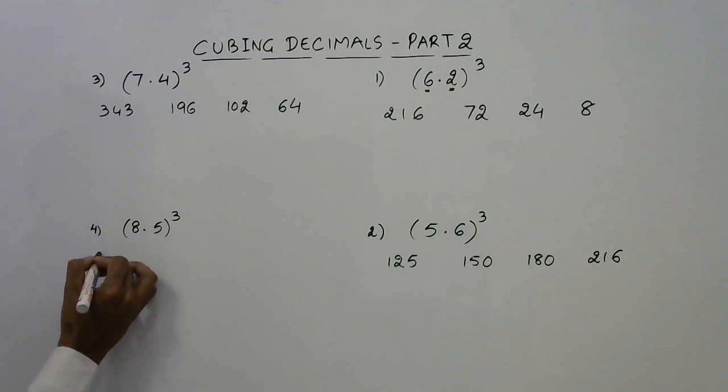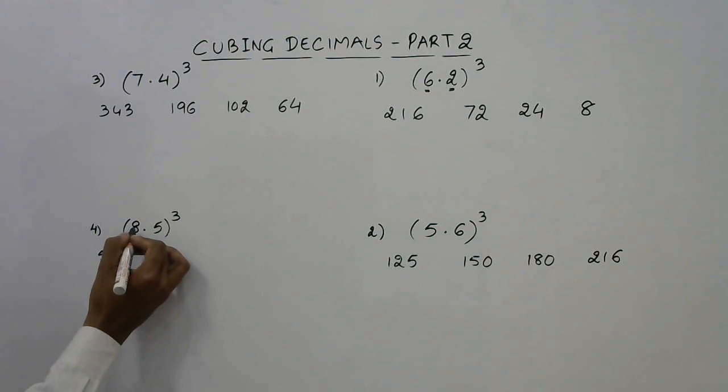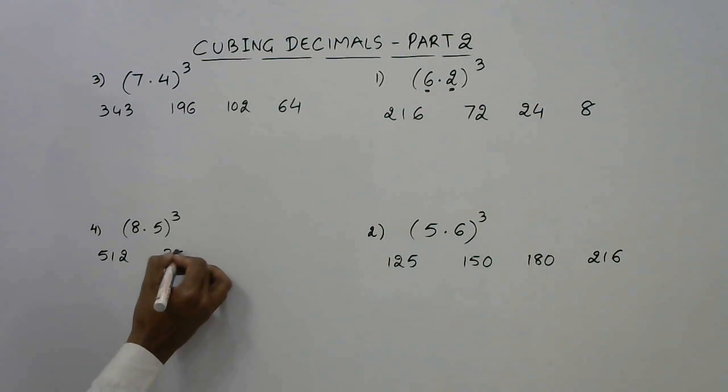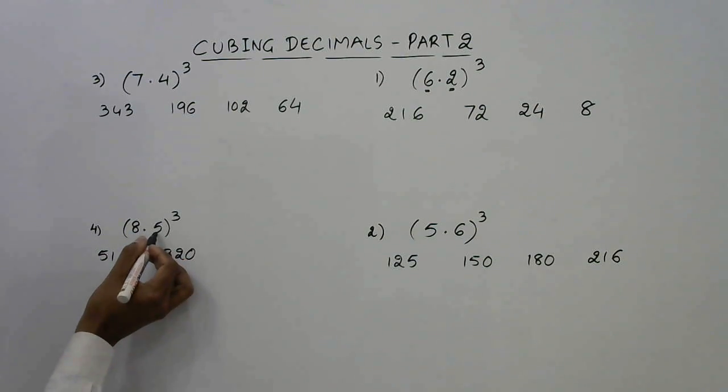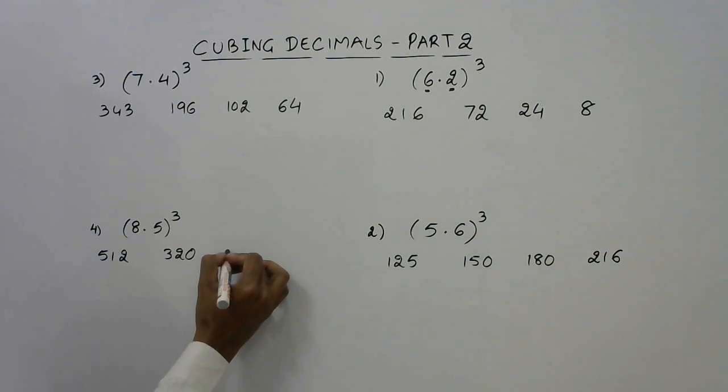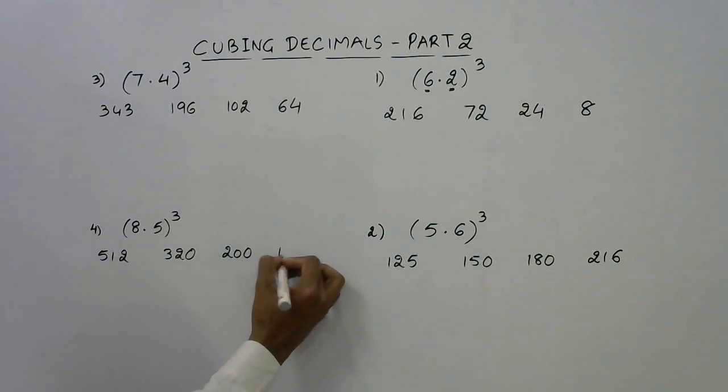Now 8 cube is 512. 8 square is 64, 64 into 5 is 320. Then 5 square is 25, 25 into 8 is 200 and finally 5 cube is 125.